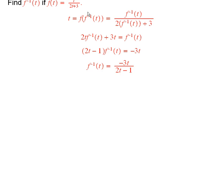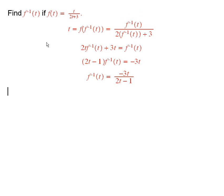Now f of something is equal to the something divided by 2 times the something plus 3. So I know that f of f inverse of t is equal to this. And so now all that really remains is to solve this equation for f inverse of t.